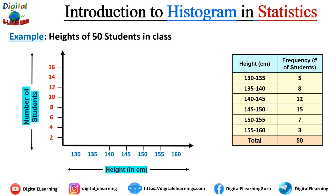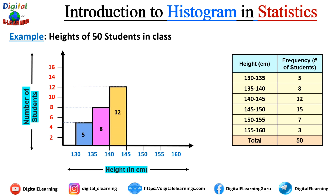Now we start constructing the vertical bars. For the first bin, the height range is 130 to 135 and the number of students is 5, so we plot a bar reaching up to 5. For 135 to 140, we have 8 frequencies, so the bar reaches up to 8. We continue similarly for the third, fourth, fifth, and sixth bars. All values are displayed in the bars, and that is how you construct a histogram.